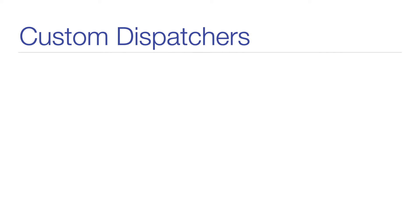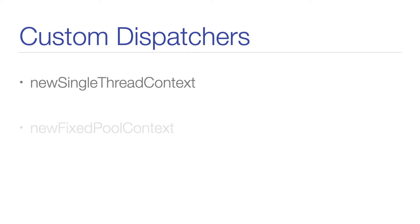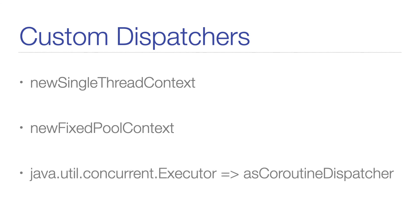Instead of using a predefined coroutine dispatcher implementation, you can also create your own ones, and the coroutines library provides some helper functions for this. You can use newSingleThreadContext to create a dispatcher that runs on a single thread, or you could use newFixedPoolContext to use a dispatcher that internally uses a thread pool of a specified size. What you can also do is create your own custom executor and use the .asCoroutineDispatcher function to convert it to a coroutine dispatcher.